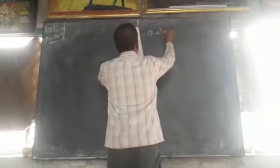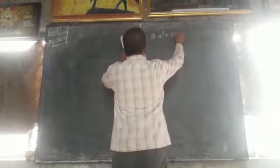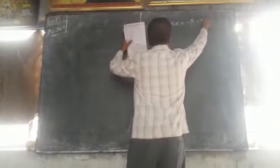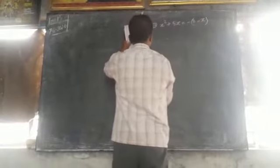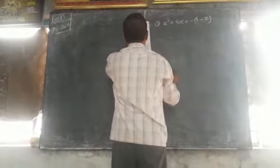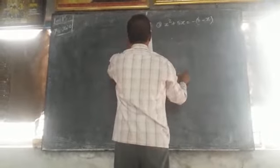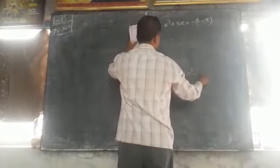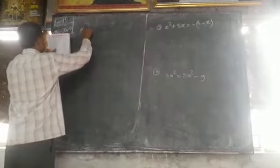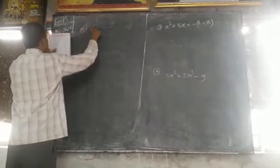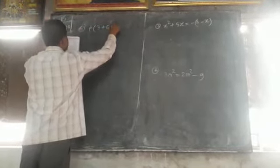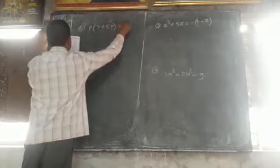x squared plus 5x is equal to minus 3 minus x. So, 3m squared is equal to 2m squared minus 9. But, p squared plus ap is equal to minus 5.